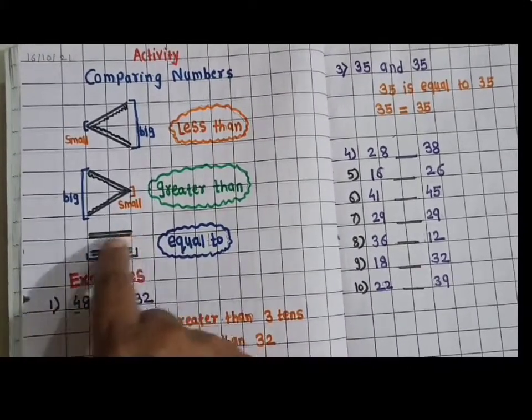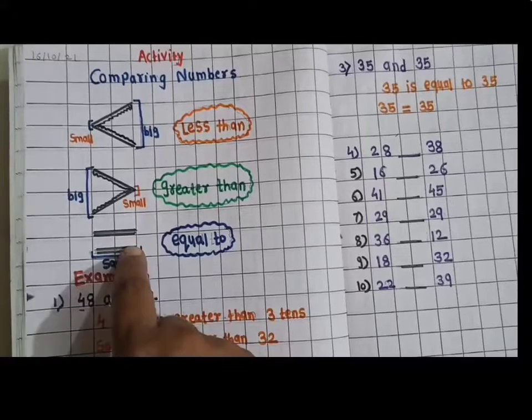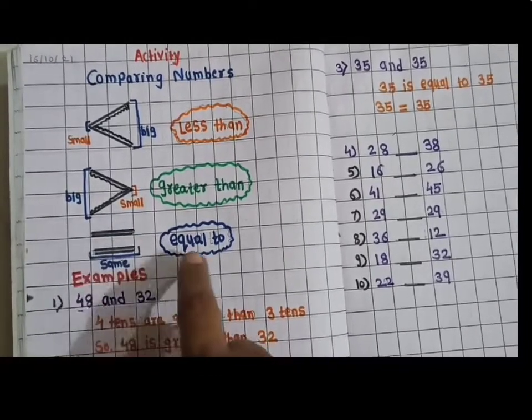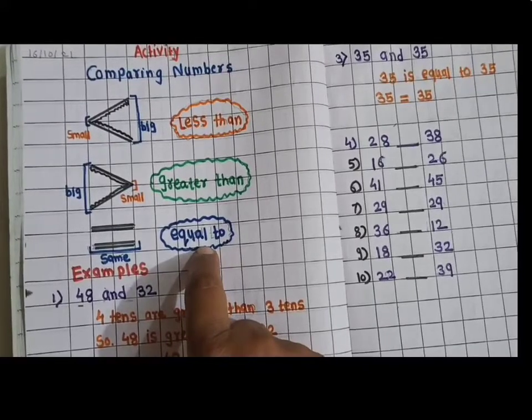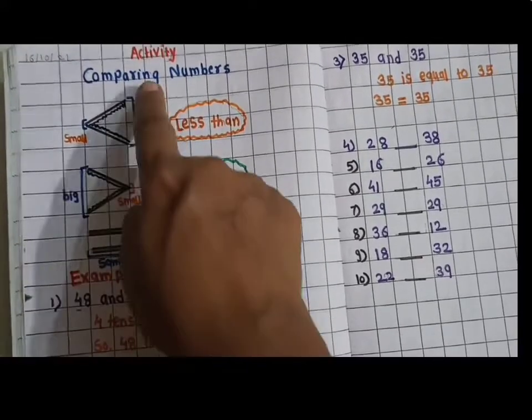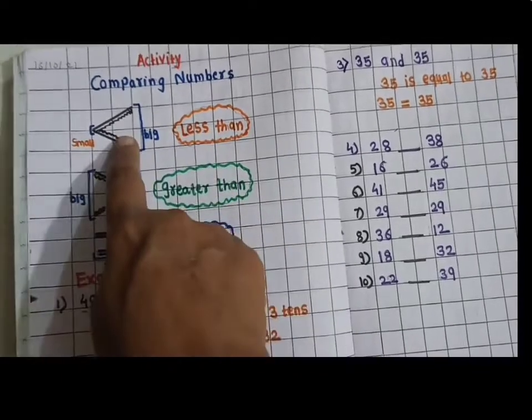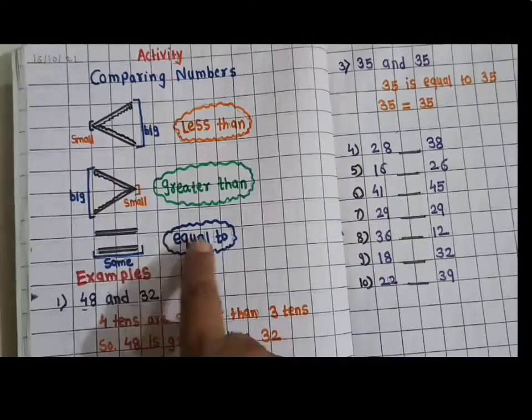And here two slipping lines or vertical horizontal lines, it is called equal to. You have to draw these three signs: less than, greater than, and equal to.